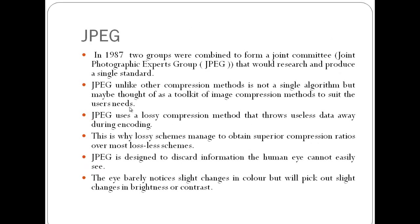In 1987, a JPEG group was formed which produced a single standard for image compression. JPEG, unlike other compression methods, is not a single algorithm but may be thought of as a toolkit of image compression methods to suit the user's need.